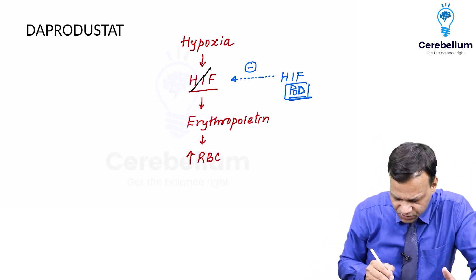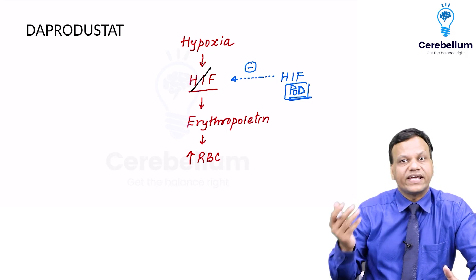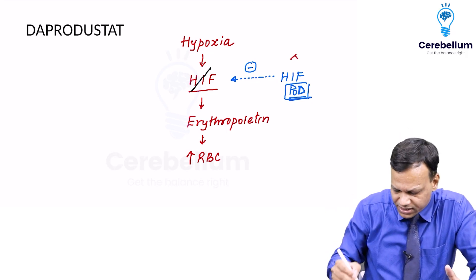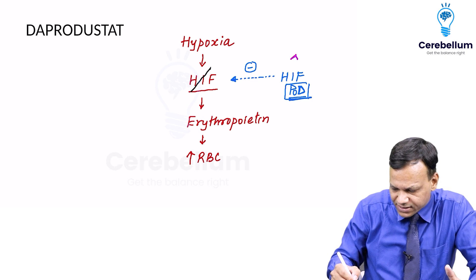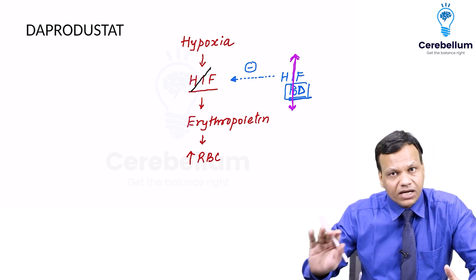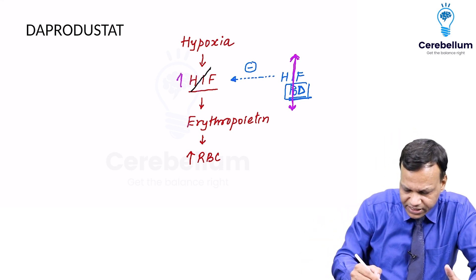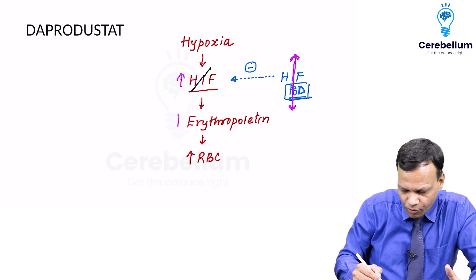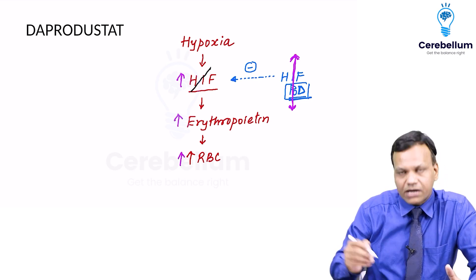So what we have done is we have developed a drug, or an enzyme inhibitor, which inhibits this enzyme. If we inhibit this enzyme, HIF proline hydroxylase, what will happen? HIF cannot be inhibited, so the level of HIF increases. When this increases, erythropoietin increases, and that will increase RBC production.